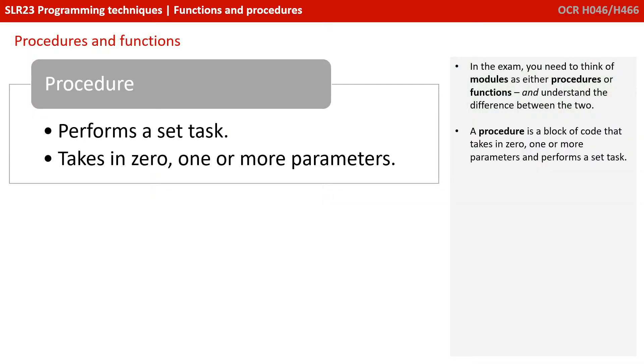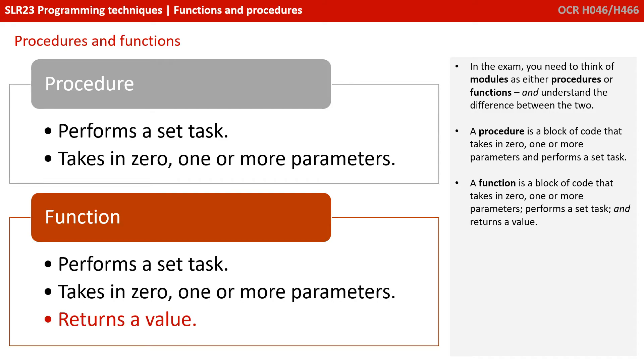A procedure is a block of code that takes in zero, one or more parameters and performs a set task. A function is a block of code that takes in zero, one or more parameters, performs a set task and returns a value.